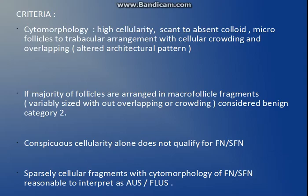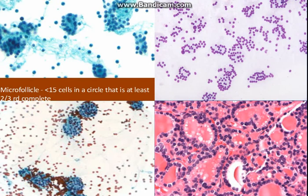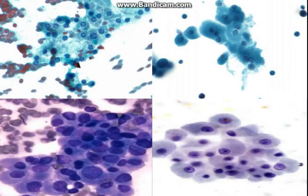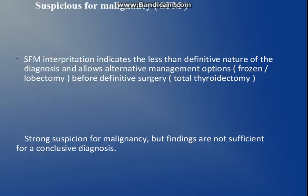There must be microfollicles, there must be scant colloid, and there should be collective findings — not only one finding. Microfollicle has a specific definition: the cells should be less than 15, or even 10 by some, arranged in a circle that is at least two-thirds complete. Sometimes we have a subcategory: follicular neoplasm, Hurthle cell type, where around 75% of the cells are Hurthle cells — with abundant finely granular cytoplasm, a central to eccentric nucleus, and a prominent nucleolus.